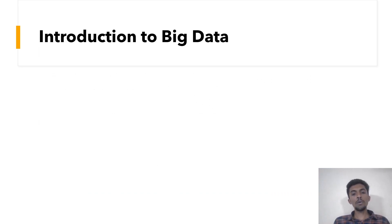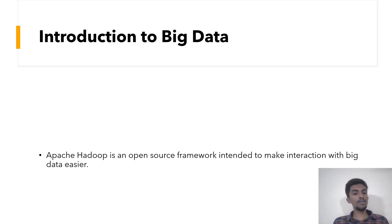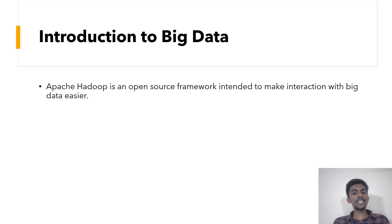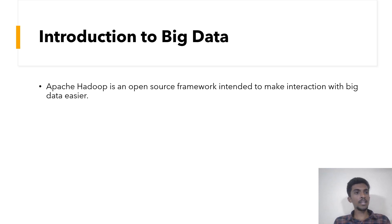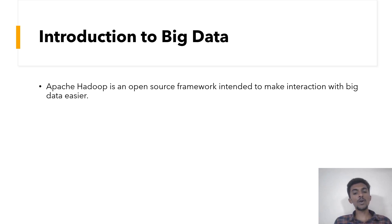First, introduction to Big Data. This Hadoop ecosystem is a part of Big Data, and Apache Hadoop is an open source framework intended to make interaction with Big Data easier. Everyone knows what data is — the data we use daily on devices. For example, if you take YouTube, whatever we search and whatever we see, all that data will be stored in the YouTube server. They will have a server where our data is stored, and according to that, we will get recommendations in future. That is how the Big Data framework works.